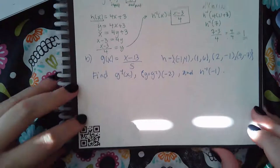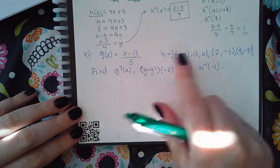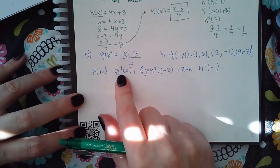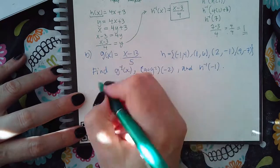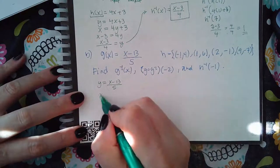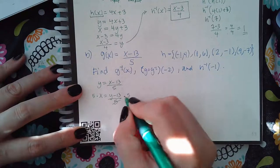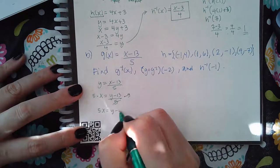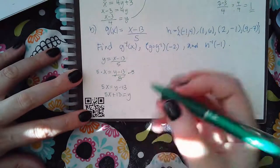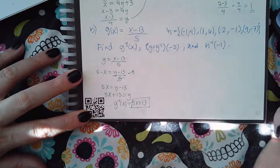For the second example, g is the regular function and h is the discrete function. To find g inverse of x, since it's a function I follow the rules: change to y, interchange x and y, then solve for y — first clear the denominator, then add 13 over. Now y is by itself, so write it in inverse notation: g inverse of x equals 5x plus 13.